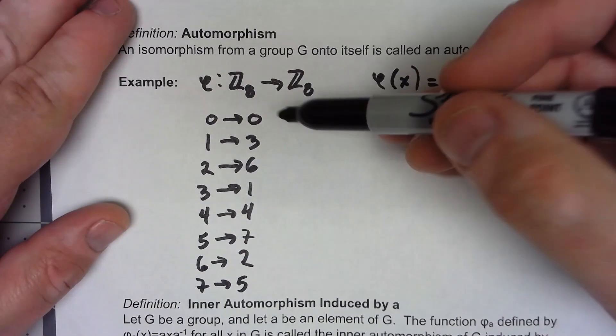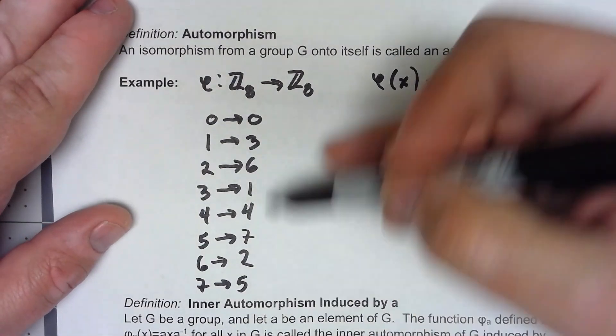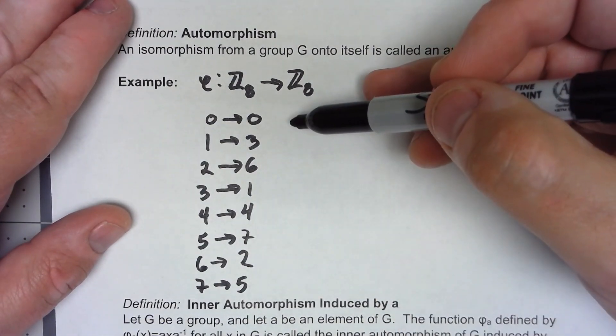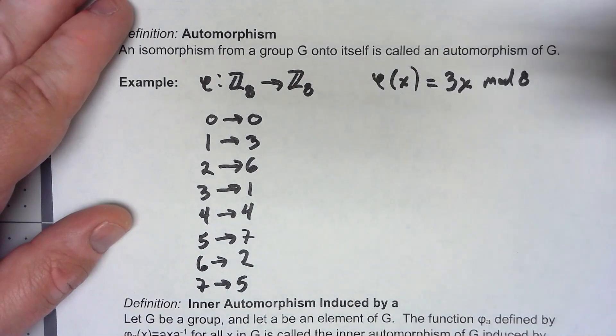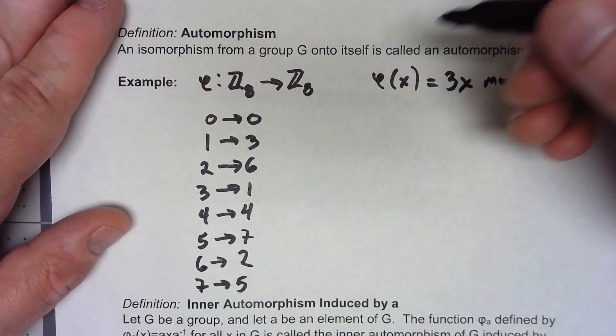So it's easy to see no two things map to the same thing. Every single element of Z8 is there, therefore it's both one-to-one and onto.